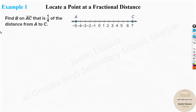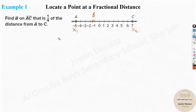We need to find point B on segment AC, where B is one fourth of the distance from A to C. There is a point somewhere in between — that point is called B, and it is one fourth of the distance from A to C. Here, A is the initial point x1, and C is the terminal point x2. The distance from A to B would be one fourth of the total distance from A to C.